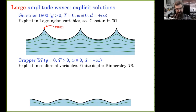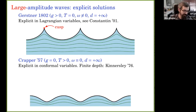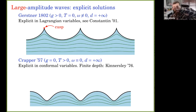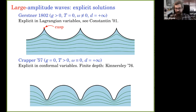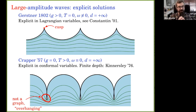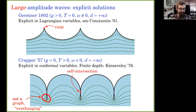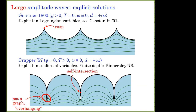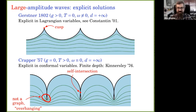I'll focus on infinite-depth Crapper waves, though there's also a finite-depth version due to Kinnersley in the 1970s. Like Gerstner waves, Crapper waves have the property that any streamline can be declared the free surface and you still get a solution. But instead of getting steeper crests toward a cusp, the surface gets more and more rounded. Near the end of the solution curve, the surface ceases to be a graph — creating tiny pockets near the trough I call overhanging — and finally two crests touch, trapping a bubble of air. ω here is the vorticity, the curl of the velocity field.